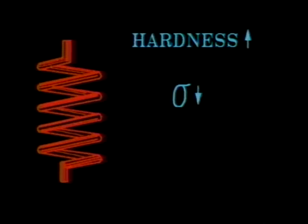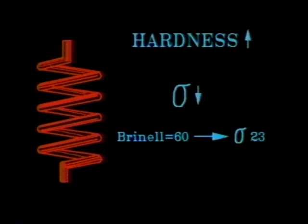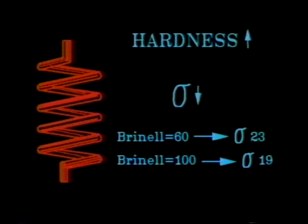Hardness in age-hardenable aluminum alloys changes the electrical conductivity of the alloy. The electrical conductivity decreases as hardness increases. As an example, a Brinell hardness of 60 is represented by a conductivity of 23, and a Brinell hardness of 100 of the same alloy would have a conductivity of 19.